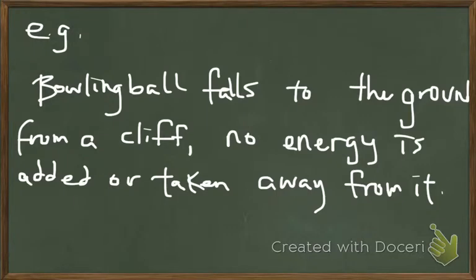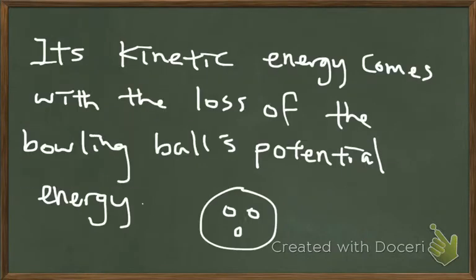For example, when a bowling ball falls to the ground from a cliff, no energy is added or taken away from it. This is because its kinetic energy comes with the loss of the bowling ball's potential energy. Here's how it works.